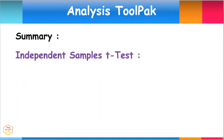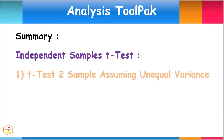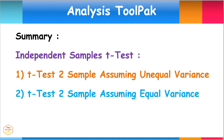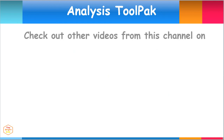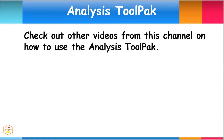In summary, we discussed how to use the Excel Analysis ToolPak to conduct the t-test: Two-Sample Assuming Unequal Variance and the t-test: Two-Sample Assuming Equal Variance. Please check out other videos from this channel on how to use the Analysis ToolPak, the F-test, ANOVA, correlation, regression, and many more.